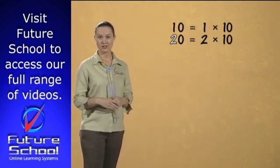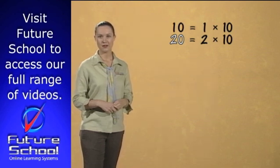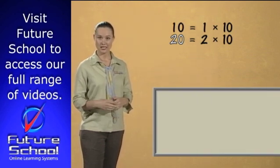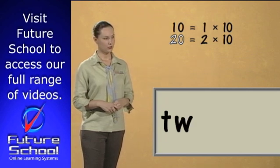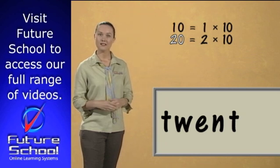It has 2 units of 10 and 0 units of 1. The word is written like this: T, W, E, N, T, Y.